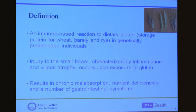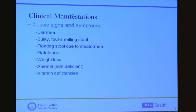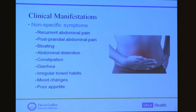Celiac disease is defined as an immune-based reaction to dietary gluten, which is the storage protein for wheat, barley, and rye, in genetically predisposed individuals. Injury to the small bowel — characterized by inflammation and villus atrophy — occurs when the body is exposed to gluten. This results in chronic malabsorption, nutrient deficiencies, and a number of GI symptoms. The classic signs and symptoms include diarrhea, bulky foul-smelling floating stool due to steatorrhea from fat malabsorption, flatulence, weight loss, iron deficiency anemia, and various vitamin deficiencies.